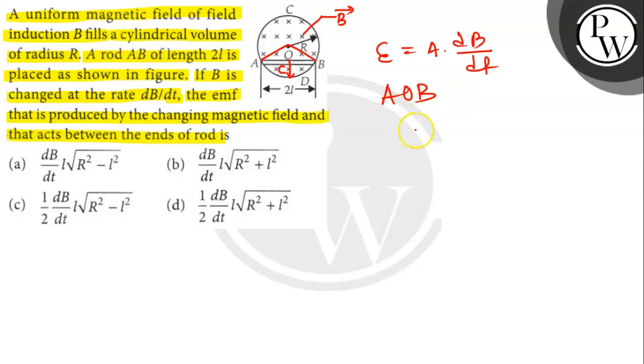From the figure, OC is equal to root over of OB square minus BC square. So OC is equal to root over of R square minus L square.